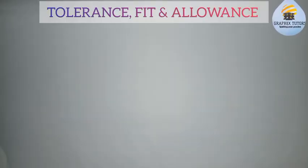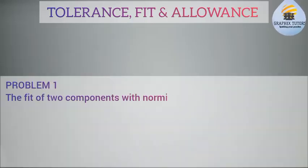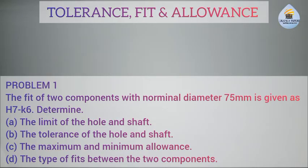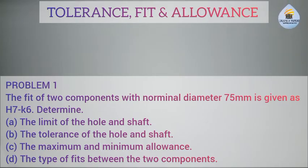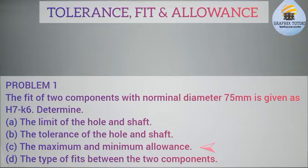Good everyone, my name is Graphics. Today we want to solve this engineering problem. It says: the fit of two components with nominal diameter 75 millimeters is given as H7/K6. Determine the limits of the hole and shaft, the tolerance of the hole and shaft, their maximum and minimum allowance, and the type of fit between them.